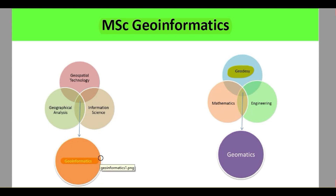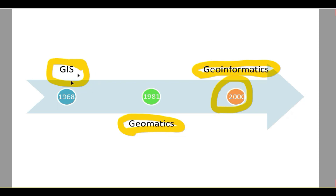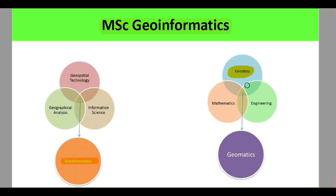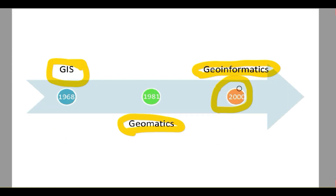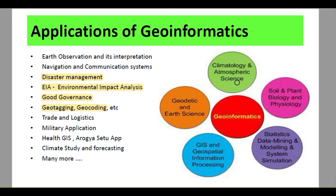Geoinformatics is the next version of geomatics. Looking at the timeline, in the 1960s and 70s there was a branch known as GIS, which then developed into geomatics — an amalgamation of geodesy, mathematics, and engineering. When you add informatics into it, you get Geoinformatics as a very superior type of branch of study.